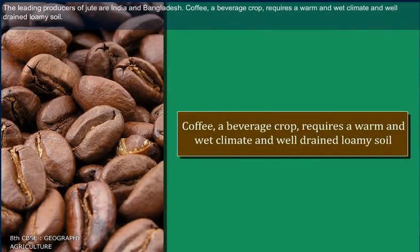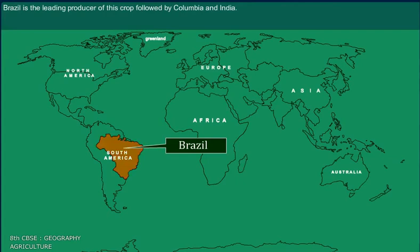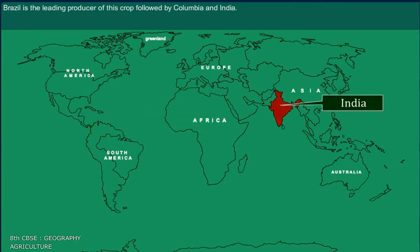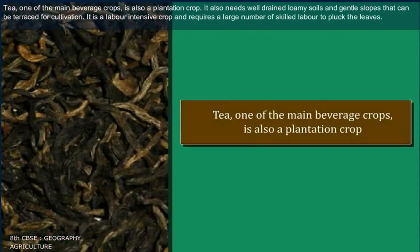Coffee, a beverage crop, requires a warm and wet climate and well-drained loamy soil. Brazil is the leading producer of this crop, followed by Colombia and India.